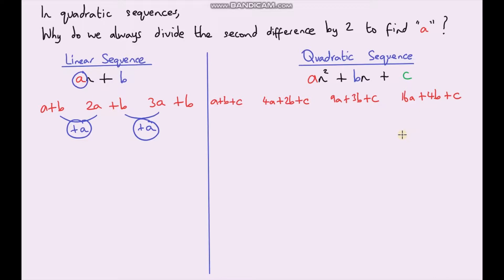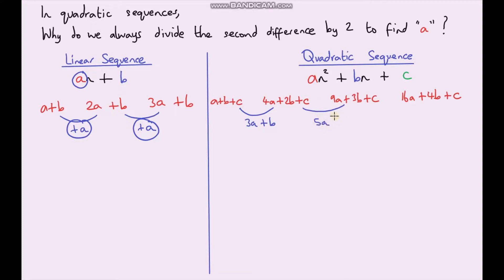Now let's find the first differences. The difference between the first and second terms: we're adding on 3a and also a b, so it's 3a + b. The c's cancel out. Between the second and third terms we're adding on 5a + b. And between the third and fourth terms we're adding on 7a + b.